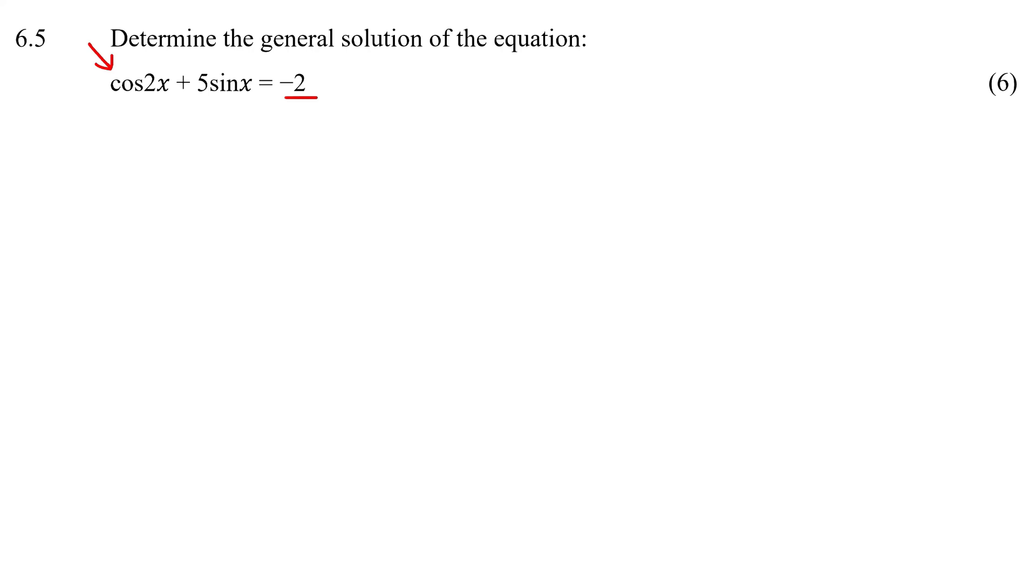Let me quickly show you some examples. If I had something like cos 2x plus 5 sin x cos x equals minus 2, now I can see that this middle term is a sin and a cos.